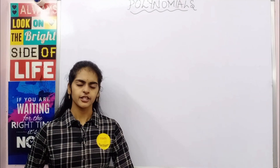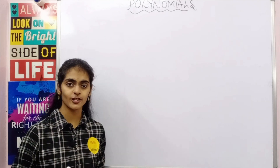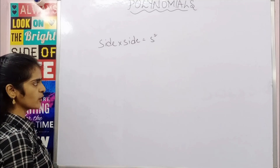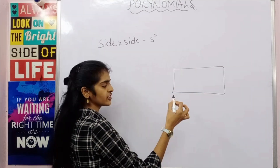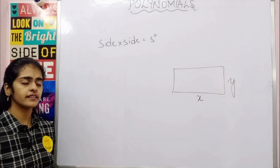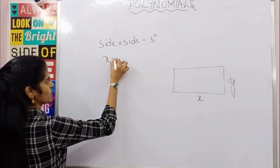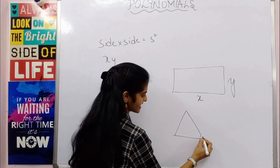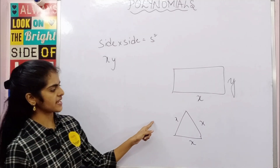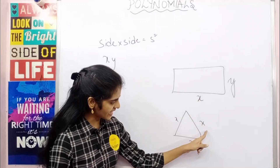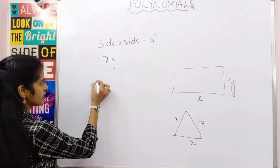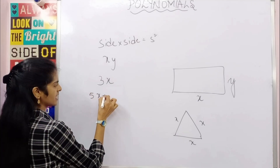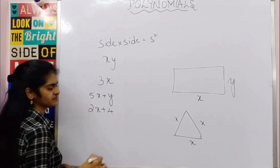What is the area of a square? Area of a square is side squared — s into s, which is s². For a rectangle with length x and breadth y, the area is xy. For a triangle with side x, the perimeter is x plus x plus x, which is 3x. We have also learned expressions like 5x plus y, 2x plus 4, and so on.